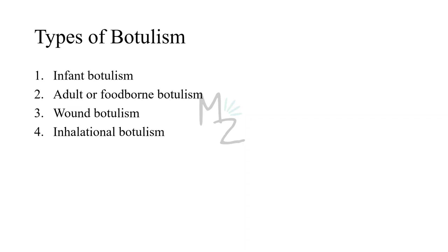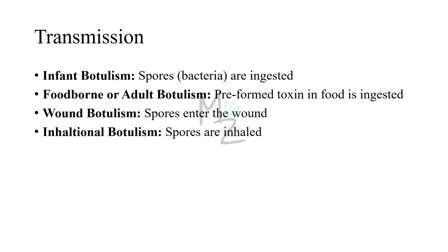There are four types of botulism, with three being most common. Infant botulism is caused by spore ingestion — as in honey. Foodborne or adult botulism occurs when an adult ingests food containing a preformed toxin, such as from canned foods. Wound botulism occurs when spores contaminate a wound, germinate, and produce toxin at the site — this is common in intravenous drug abuse. Inhalational botulism results from inhaling spores.